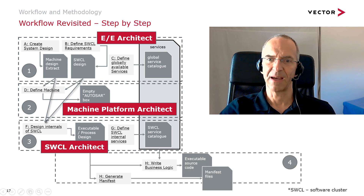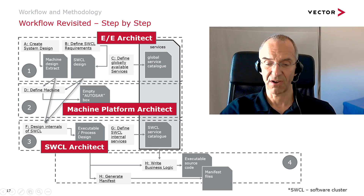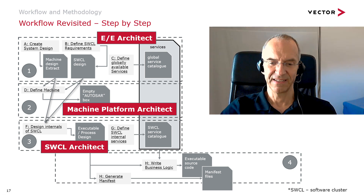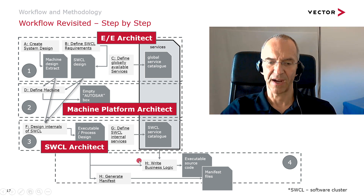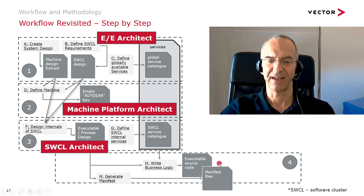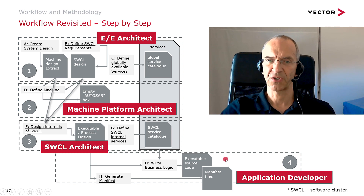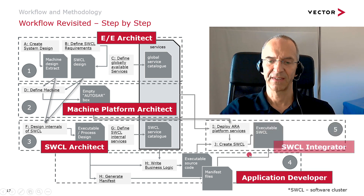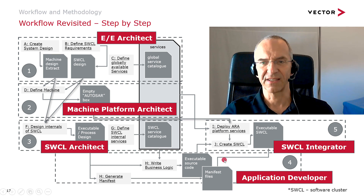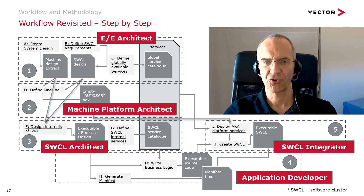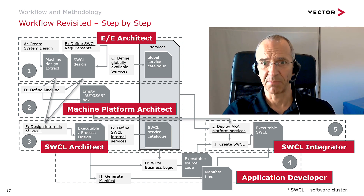Now it's the application developer's turn. He starts defining the internals of the software, defines all the business logic, and uses the model provided by the software cluster architect. The result of this phase is executable source code and a number of manifest files, which are handed over to the software cluster integrator. The software cluster integrator then sets up all the executable components and makes sure they are properly connected to the platform services.